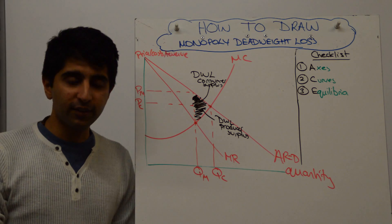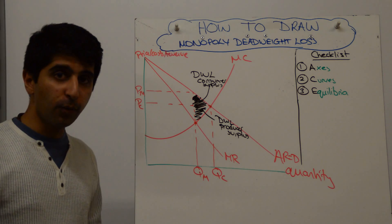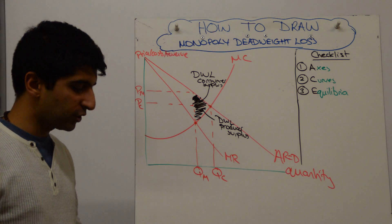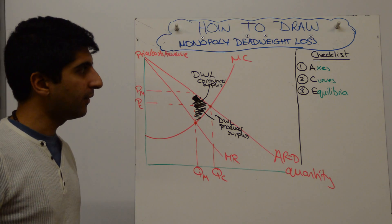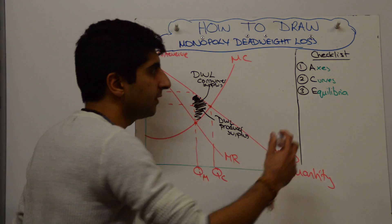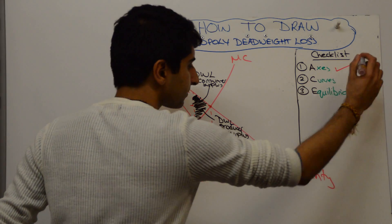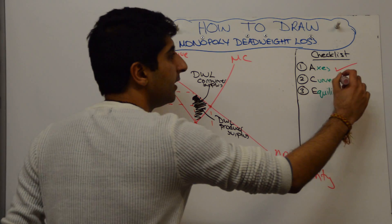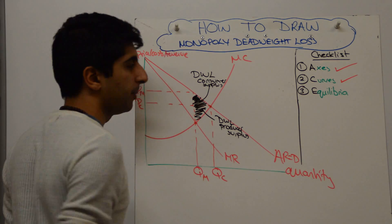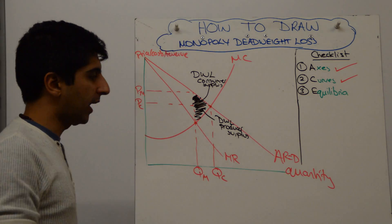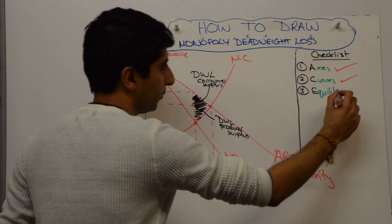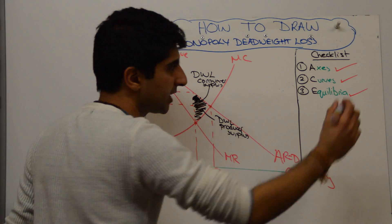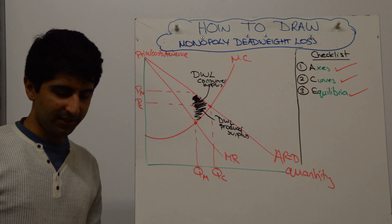Okay, that's how you construct this diagram. Then obviously go through your checklist. Have you labelled your axis? Yes. Have we labelled our curves? Yes. Have we put our key markers on and labelled those? Yes, we have. In which case, we are done.